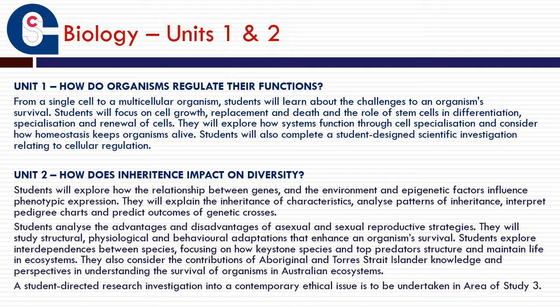In Unit 2 we examine how inheritance impacts on diversity. This involves a study of genetics and how the environment impacts on the expression of our genes. We look at different mechanisms for inheritance and ways to predict outcomes in genetic crosses. We also examine the advantages and disadvantages of asexual and sexual reproductive strategies, the adaptations organisms have evolved to enhance survival, a bit of ecology, and contributions of Aboriginal and Torres Strait Islander knowledge in understanding Australian ecosystems. At the end of Unit 2 there is a student-designed research investigation into a contemporary ethical issue.